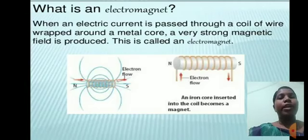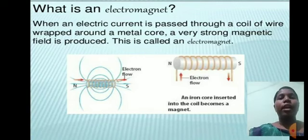What is an electromagnet? When an electric current is passed through a coil of wire wrapped around a metal core, a very strong magnetic field is produced. This is called an electromagnet.